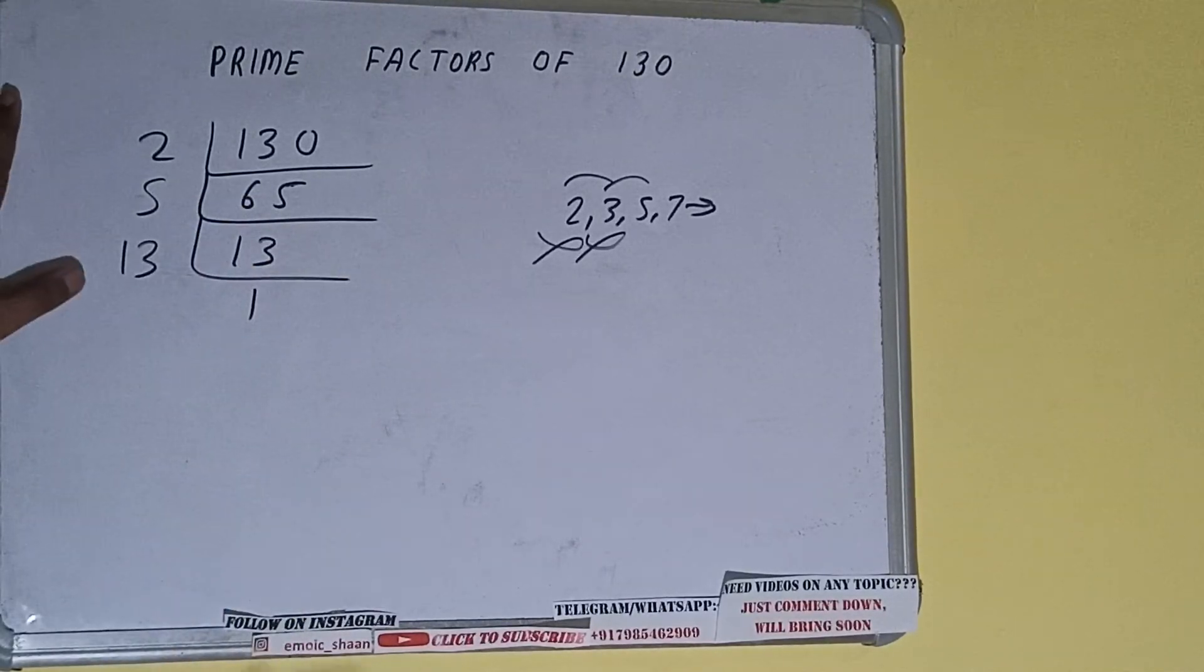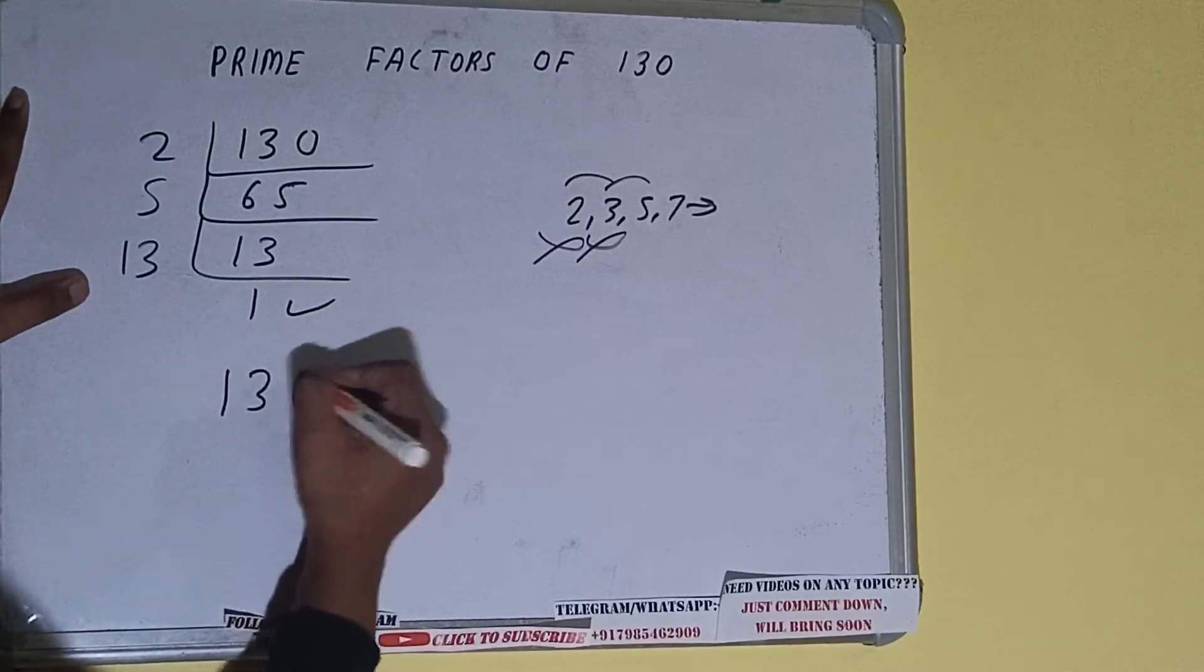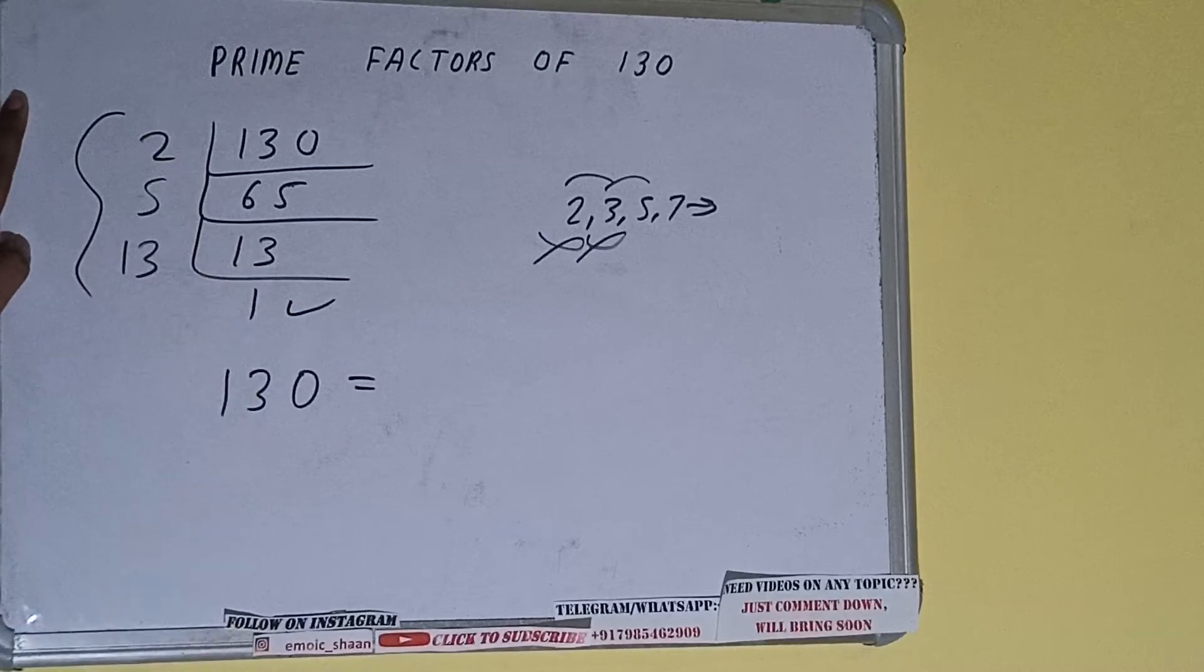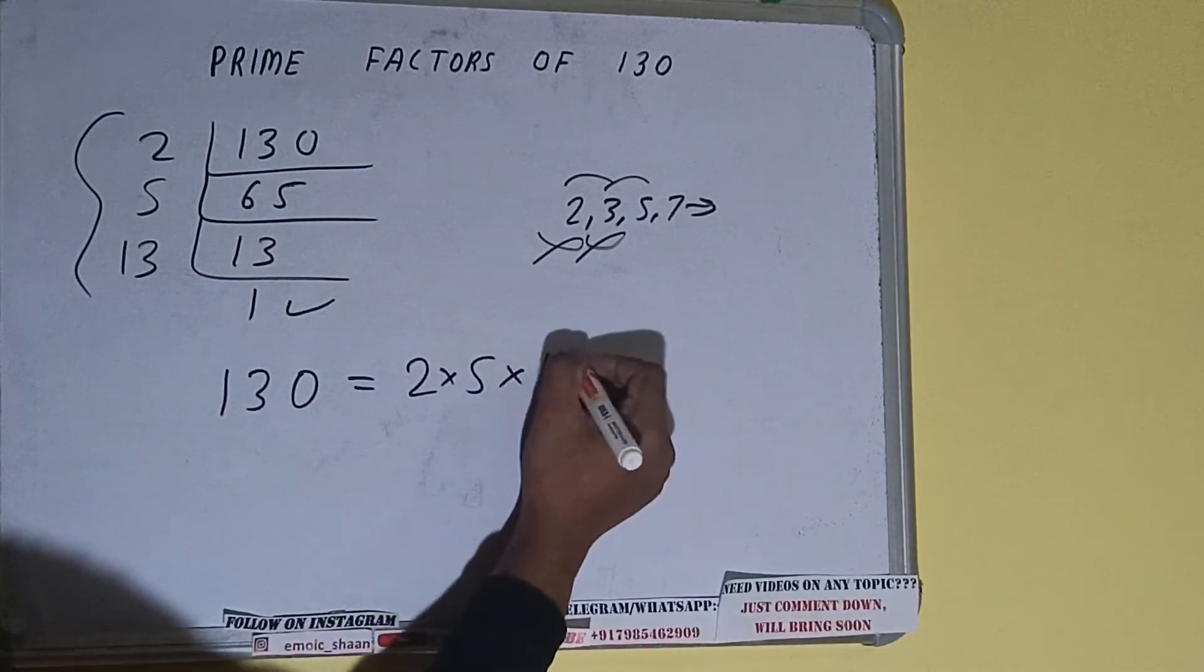Once we get one, we need to stop and do one last thing. That is, prime factor of 130 equals 2 multiply whatever we have on the left-hand side - that is 2 × 5 × 13.